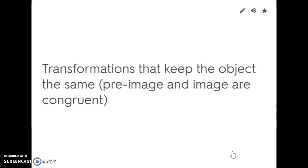Our next definition is rigid motion. Rigid motions are transformations that keep the object the same, meaning the object is congruent — the pre-image is congruent to the image. So the pre-image and image are exactly the same size. When something is a rigid motion, it stays the same size.